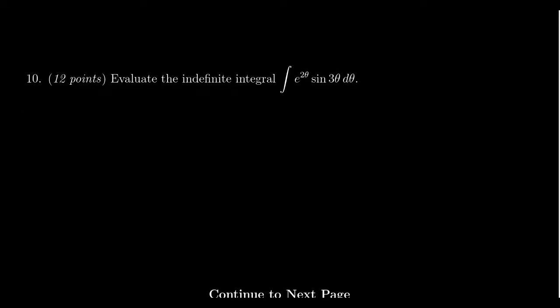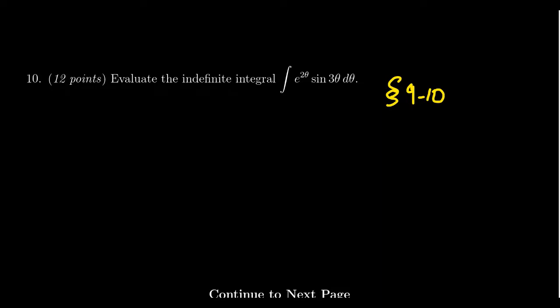Question number ten is going to be another question about integration by parts — an indefinite integral where you need a plus C at the very end. Unlike the straightforward integration by parts in question five, question ten will be more involved. Techniques like integration by cycles or integration by tabular method might be appropriate tools. Question ten might also combine integration by parts with U-substitution. Think of question ten as the most advanced antiderivative you have to calculate on this exam, because it combines all of the techniques we've learned up until this point. The harder integration by parts examples from the end of lesson nine and the beginning of lesson ten are what you should expect for this question.